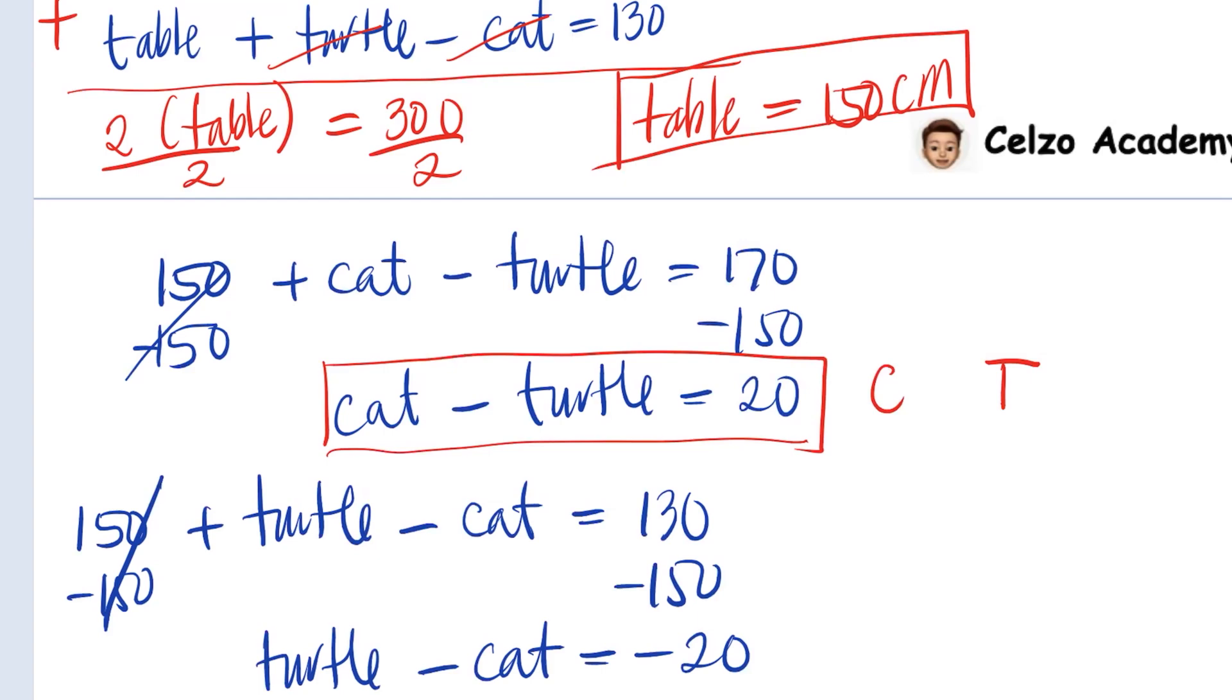And cat, of course, is taller. For example, cat can be 25 centimeters, turtle will be 5 centimeters. If cat is 24, then the turtle is going to be 19 centimeters, and so on.